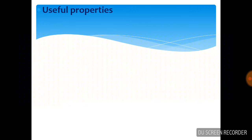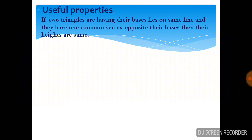We will see which properties are useful to understand the theorem. The first property is that if two triangles are having their bases lying on the same line and they have one common vertex opposite to their bases, then their heights are the same.